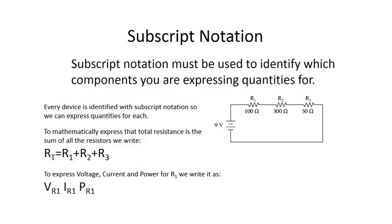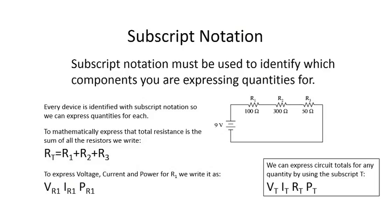By using subscript notation we can express any quantity for any component. For example, for R1 we could express voltage, current, and power just by writing VR1, IR1, or PR1 with R1 in subscript. To express totals for any circuit, we could write VT, IT, RT, or PT with the T as subscript. Ensure when using subscript notation that your letter is smaller and is actually dropped into the subscript position.